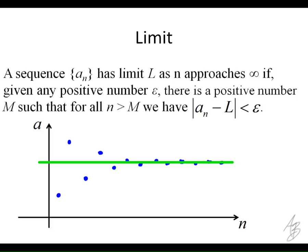Well, this right here, a sub n minus L, if that green line is L, then a sub n minus L is the distance from the point, that number to the limit, right? Does that make sense?